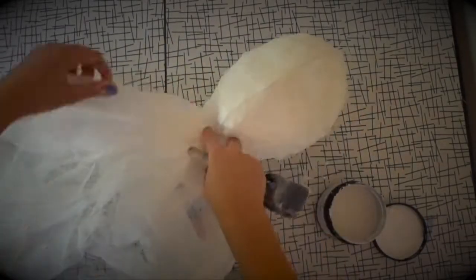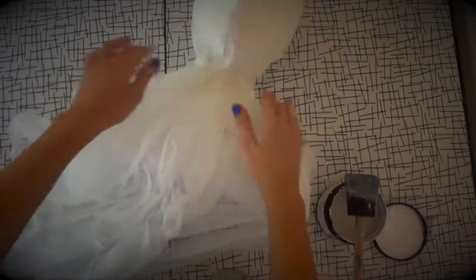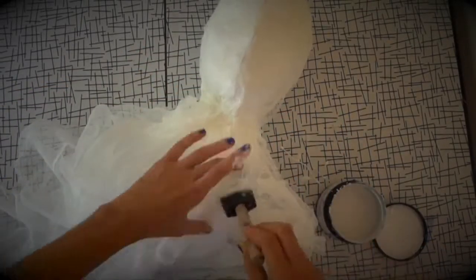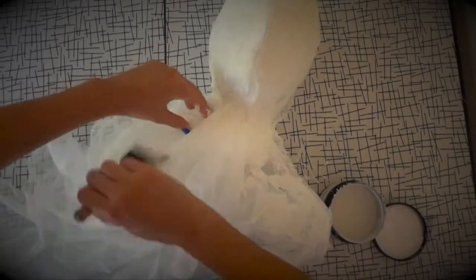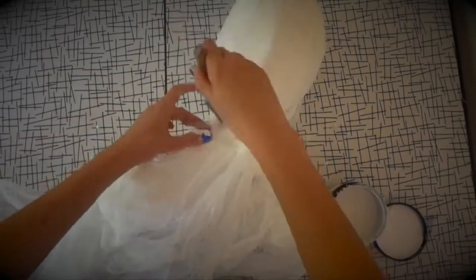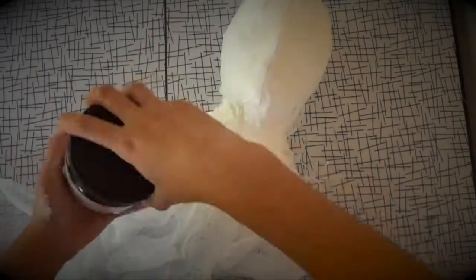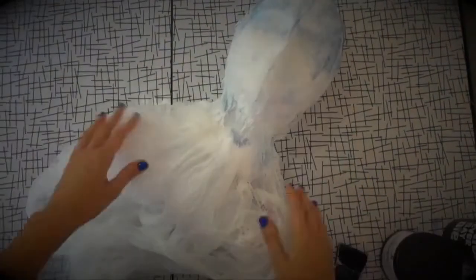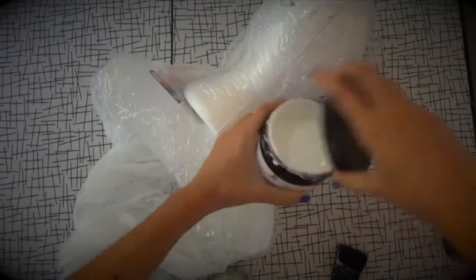This will appear messy and goopy, but don't worry. It will dry nicely. You're going to let your front side dry a bit until it is no longer wet and sticky. It doesn't have to be completely dry, but at least so it's dry to the touch. Then you can turn it over and apply the fabric to the back piece.